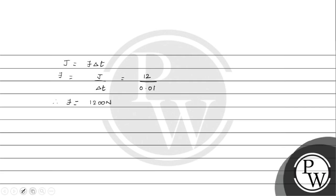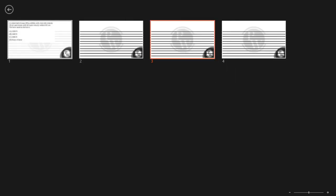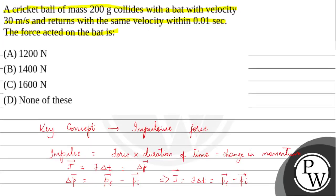We will go back to the question and mark the correct option. The force acted on the bat is, the correct answer to this question is option A 1200 newtons. Hope you have understood it well. Best of luck.